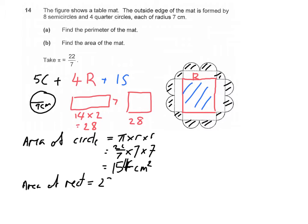Then we have the area of the rectangle. That will be 28 times 7 equals to 196 cm².